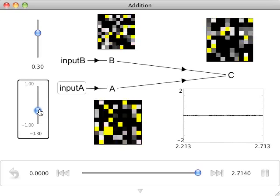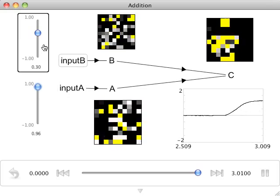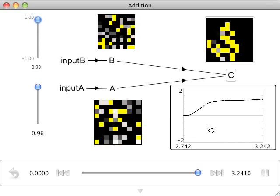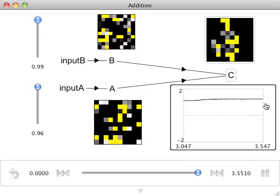If this were the case, when we move population input A to 1 and population B to 1 as well, we would expect C to be equal to 2. However, you will notice that it gets just above a value of 1.